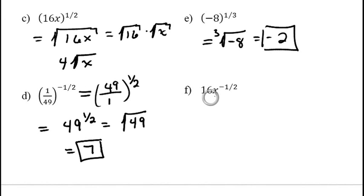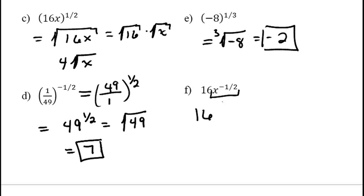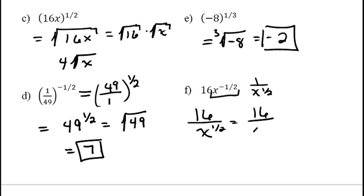For 16x to the negative 1/2: this time the 16 is not in parentheses, so only x is raised to the 1/2. The negative 1/2 on x means we write it as 1 over x to the positive 1/2, dropping x to the denominator. Since x to the 1/2 is the square root of x, the result is 16 over the square root of x.